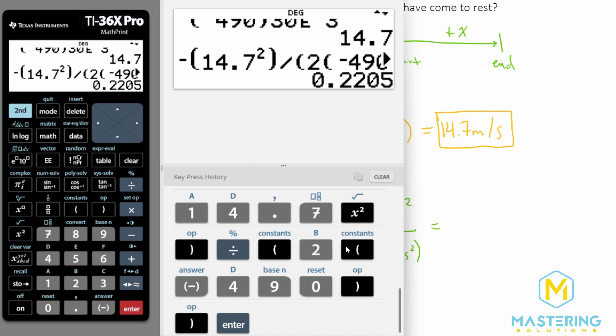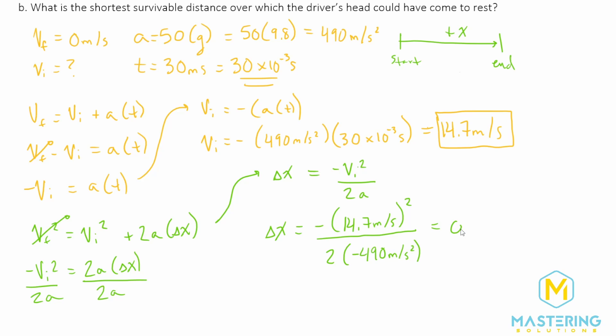which gives us 0.2205. And so that will be 0.22 meters. So here's our answer for part B for the shortest survivable distance.